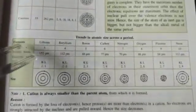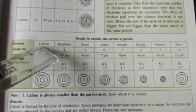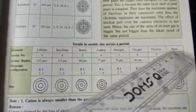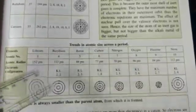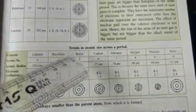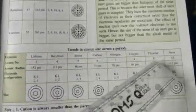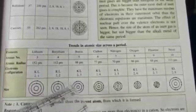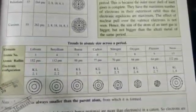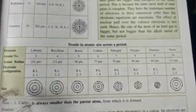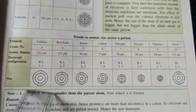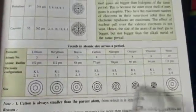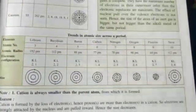Now let us see what happens when we move across a period. Taking period number two, which starts with lithium and ends with neon — we will consider up to fluorine first. When we move across a period, the number of shells remains the same. Since it belongs to period number two, the number of shells is two in each case, as shown in the diagrams.